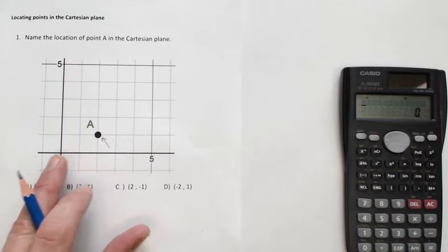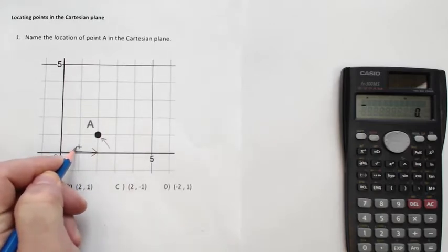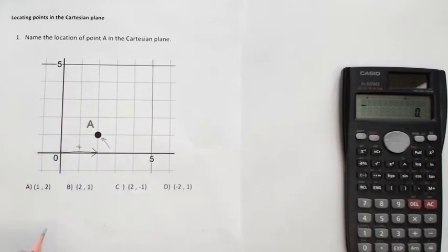First is the left or right. We're going over two to the right, two spaces. That's a positive direction for the X. So we're at two for the X.